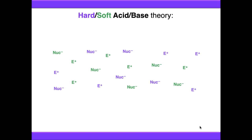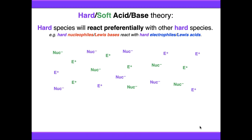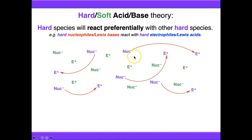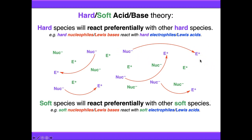The answer comes from hard-soft acid-base (HSAB) theory. The idea is that hard species — hard nucleophiles — will react preferentially with other hard species, i.e., hard electrophiles. All hard species, highlighted here, will react together. Similarly, soft species will react preferentially with other soft species — all soft nucleophiles will react with soft electrophiles.